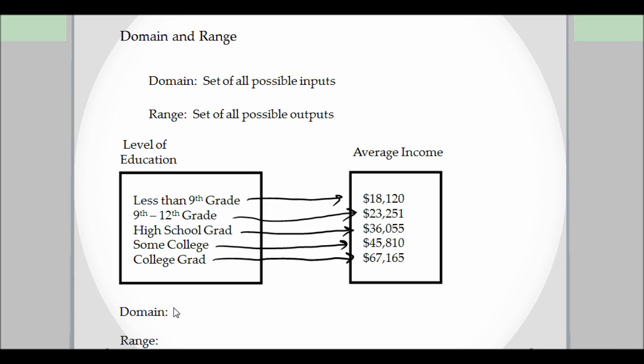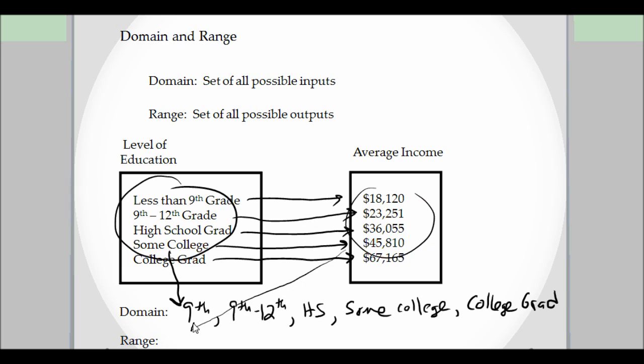So the domain is just all the inputs. So our domain is then all of this. It would be less than ninth grade, I'm going to shorthand this, ninth through twelfth, high school, some college, and then college grad. And then the range would be all the incomes.